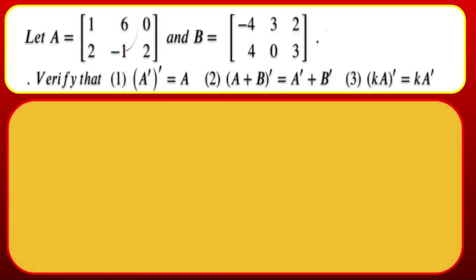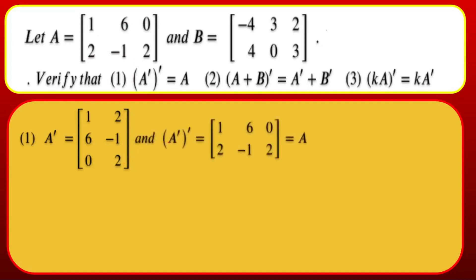A is given. A^T has first row [1, 6, 0] becoming first column and second row [2, −1, 2] becoming second column, giving a 3×2 matrix. Then (A^T)^T: the rows [1,2], [6,−1], [0,2] become columns, giving back the original matrix A. So (A^T)^T = A. Easy.